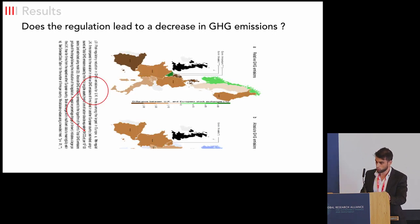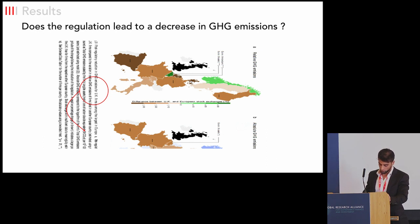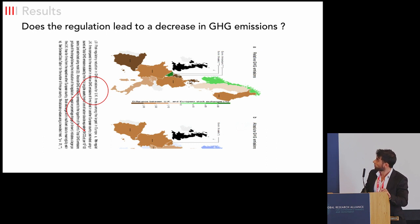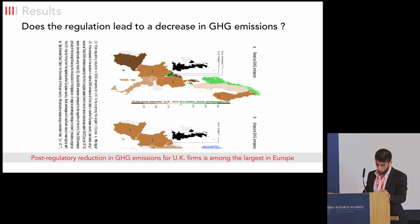So far we've compared UK firms to the average European firm. What about country-by-country comparisons — UK firms versus Spanish or French firms, for instance? Here a map shows: brown countries are countries where firms reduce their emissions less than UK firms, while blue and green countries are countries where firms reduce more of their emissions. The first thing to notice is that there aren't many blue and green countries, and where there is a differential, it is not significant. The regulation led to a decrease in emissions that is among the largest reductions in Europe over the period 2013–2016.